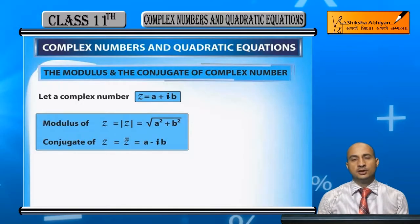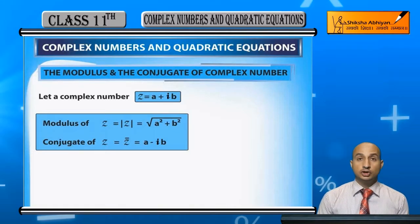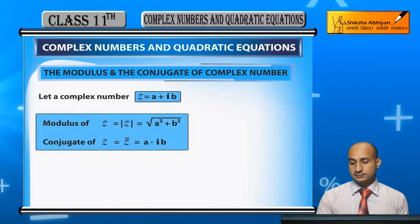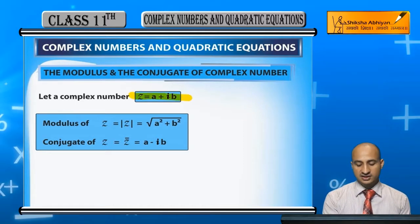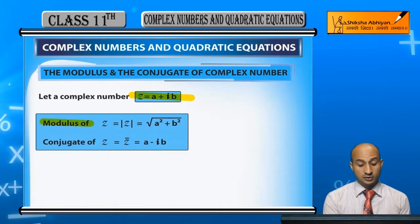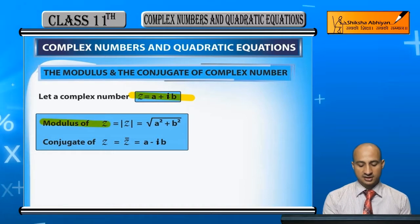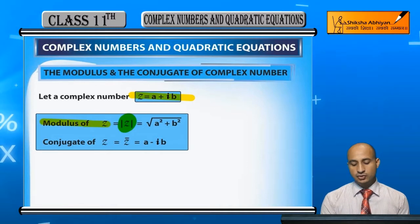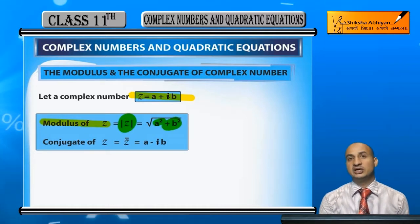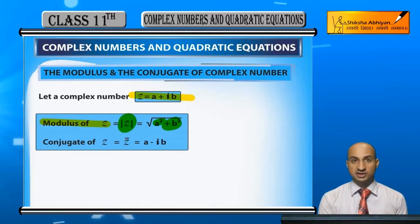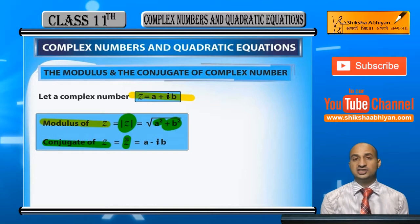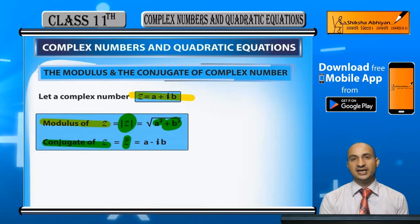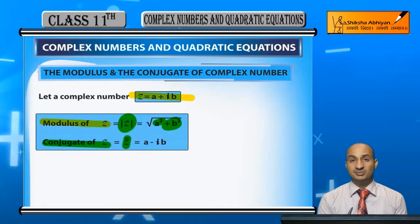The topic is complex numbers, specifically the modulus and conjugate of a complex number. If you have a complex number z = a + ib, the modulus of z is the square root of real part squared plus imaginary part squared: √(a² + b²). The conjugate of z is represented as z̄, where if you have a + ib, the conjugate is a - ib. The sign of the imaginary part is reversed.